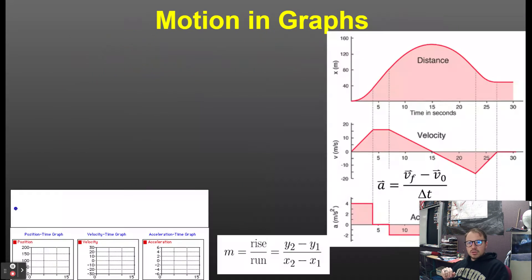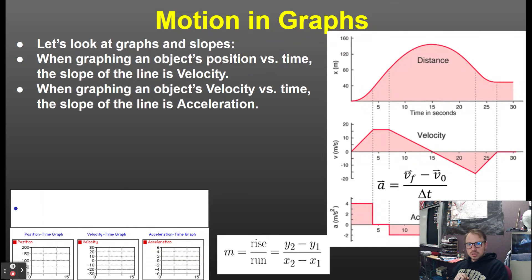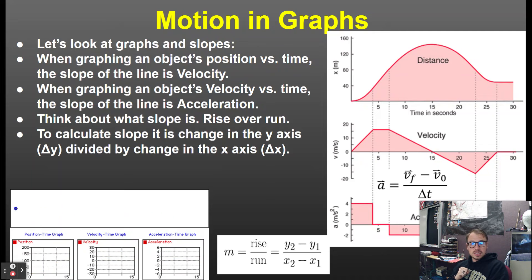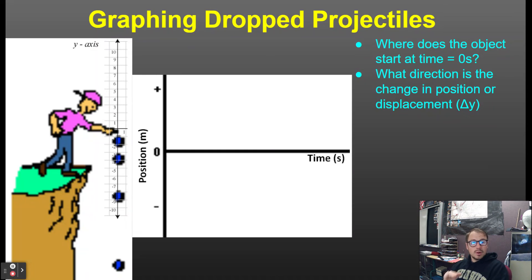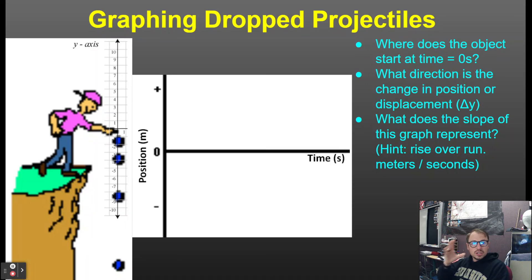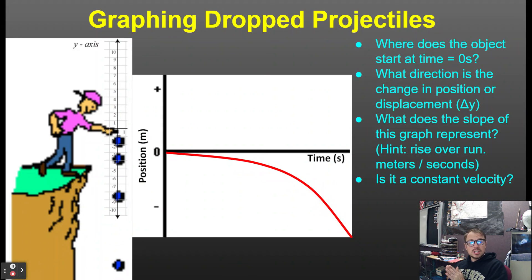How is the drop projectile represented graphically? We've already looked at this: when graphing position versus time, the slope of the line is velocity; when graphing velocity versus time, the slope is acceleration. For a dropped projectile, the position-time graph starts at the origin at time zero and curves downward — the entire graph is on the negative side. The slope at every point becomes more and more negative, meaning the object gets faster and faster.